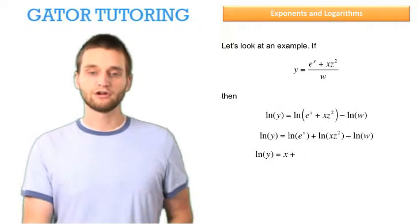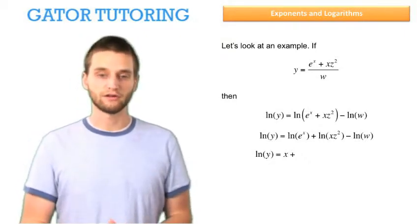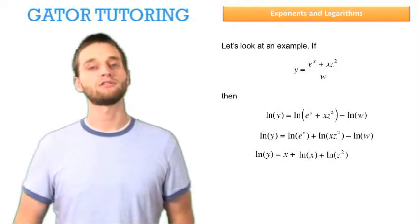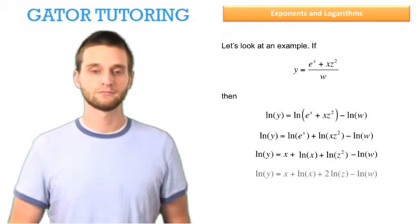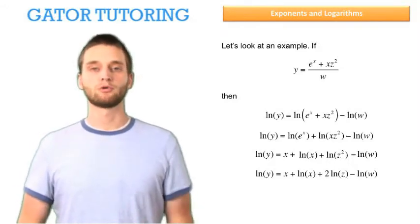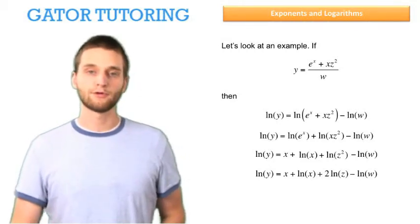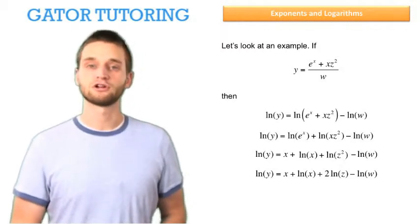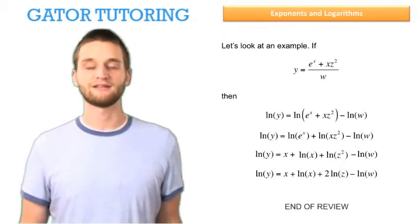The second term, the natural log of xz squared — remember from our rules that when you're multiplying two things, you want to add them. So this becomes the natural log of x plus the natural log of z squared, and then we still have the minus natural log of w at the end. Finally, the natural log of z squared: remember when we have a variable raised to an exponent, we can move the exponent from within the natural log into a coefficient of the natural log. So the natural log of z squared becomes two times the natural log of z. And that's the end of this review.